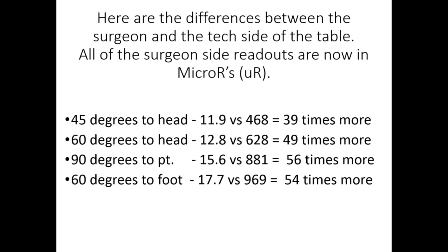Here are the differences between the surgeon and tech side of the table — all surgeon side readouts are now converted to micro R. At 45 degrees to the head: tech side 11.9, surgeon side 468 — surgeon side is getting 39 times more radiation. At 60 degrees to the head: tech side 12.8, surgeon side 628 — surgeon side getting 49 times more radiation. At 90 degrees to the patient: tech side 15.6, surgeon side 881 — surgeon side getting 56 times more radiation.